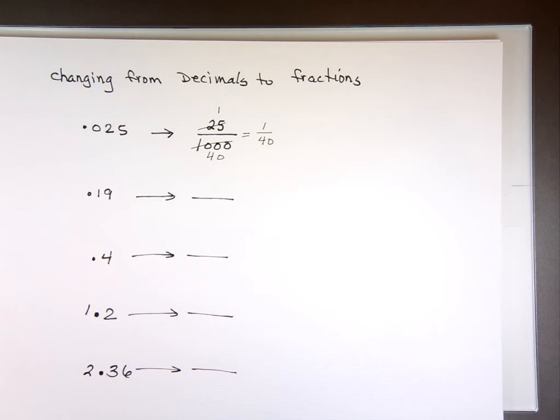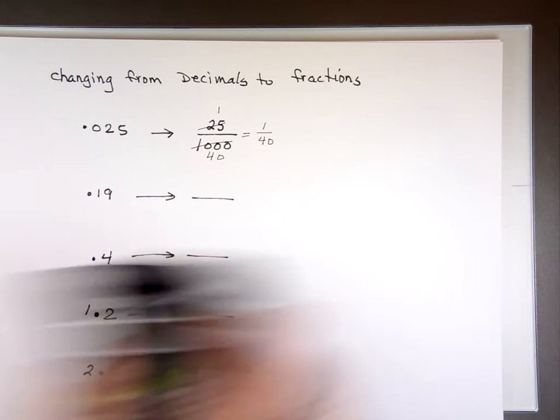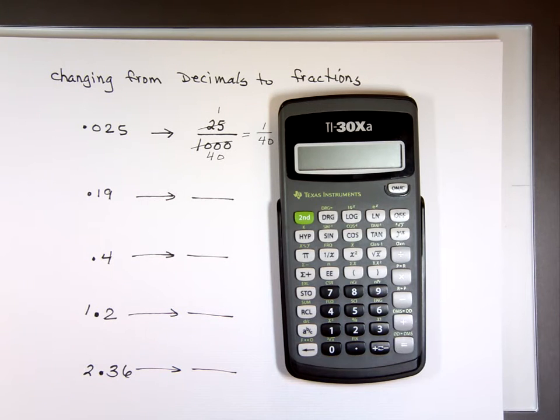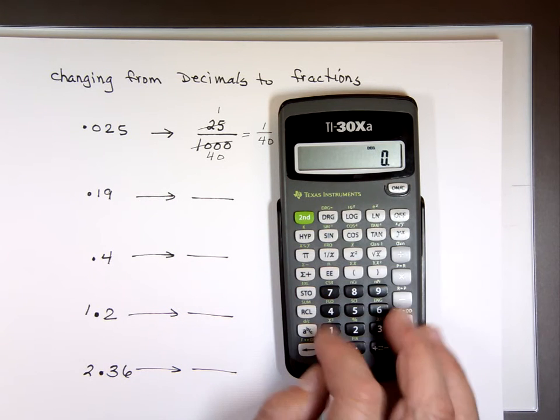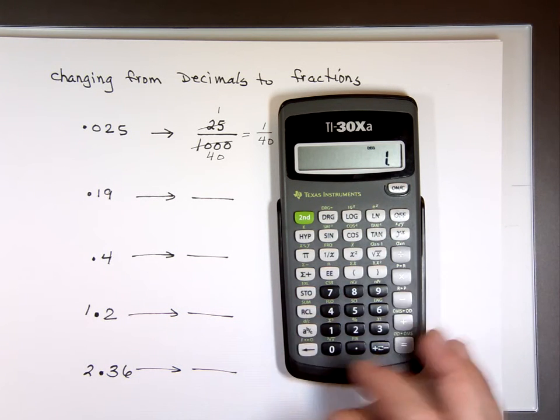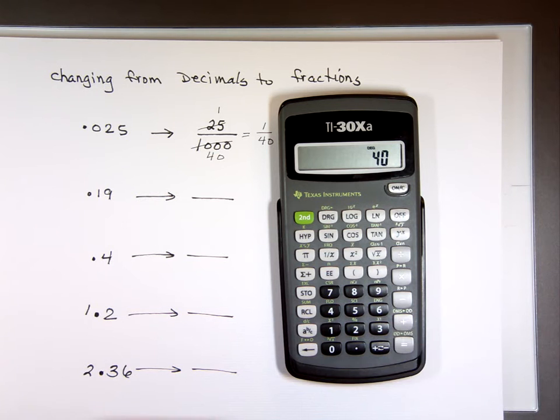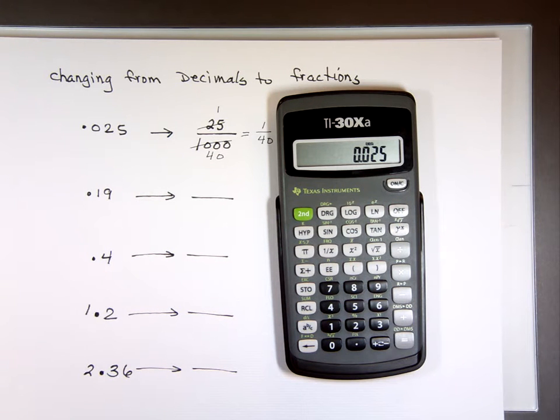Now, to prove that, I'll take my calculator here. And I'll go 1. Turn it on first. Clear it. 1 divided by 40. Ready for the answer? 0.025.